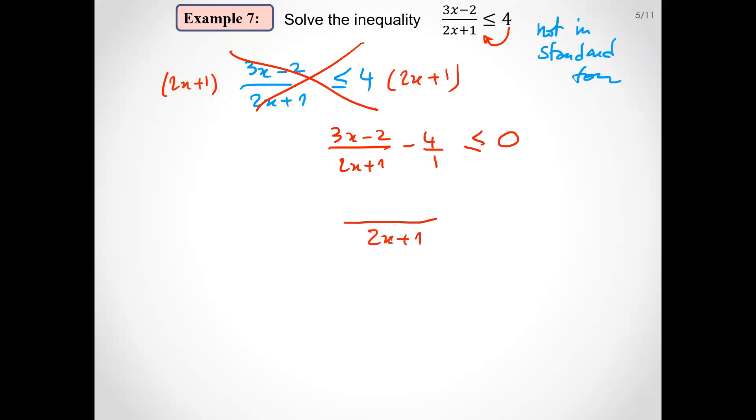Move 4 to the other side and combine these two fractions into a single fraction. The common denominator is 2x plus 1. To reduce to the same denominator, multiply this fraction by 2x plus 1 up and down. We have 3x minus 2 and expand, minus 8x minus 4 over 2x plus 1. Finally, after simplifying, minus 5x minus 6 over 2x plus 1 less than or equal zero. This is the standard form.